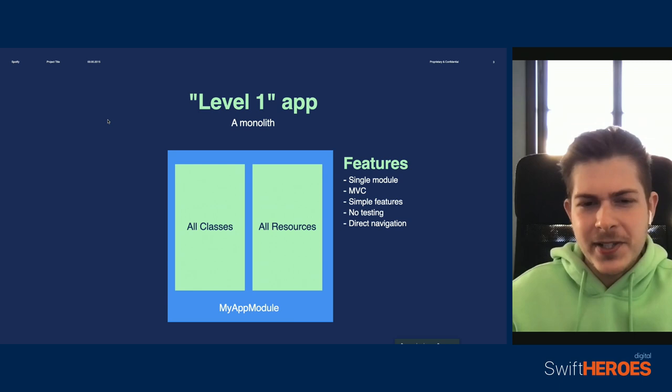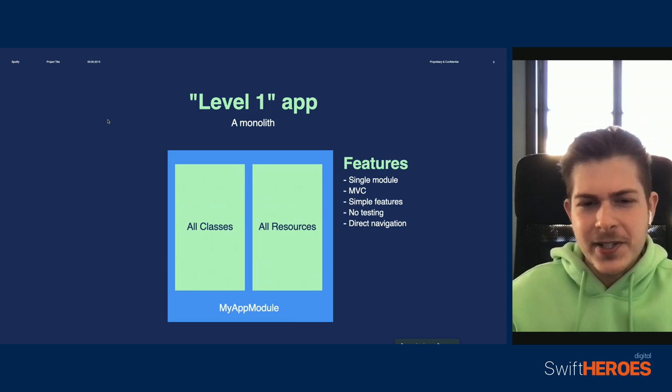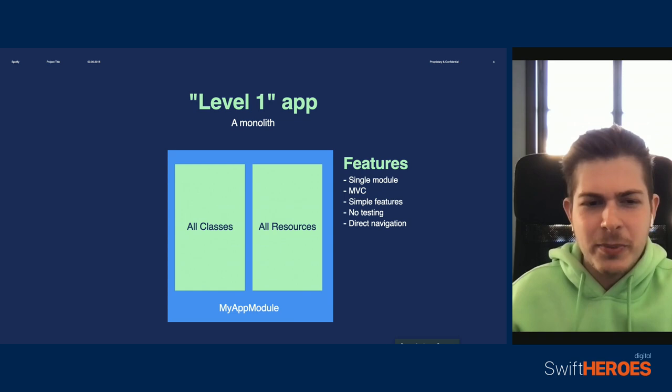Anyway, what we're seeing here is pretty much everyone's first ever app. And we can say that this format is fine if you're developing something simple. As long as your features aren't complex, this will likely solve your problem and turn out to be a pretty stable app. We can call this a level one app — something simple and straightforward that everyone starts with.